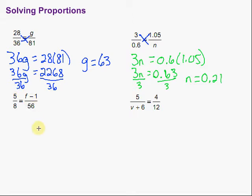Okay. Now let's look at some that maybe are a little bit scarier looking, but we can handle them too. Just remembering that we have to multiply by everything that's there. So our cross products in this one are going to be 5 times 56 and 8 times f minus 1.